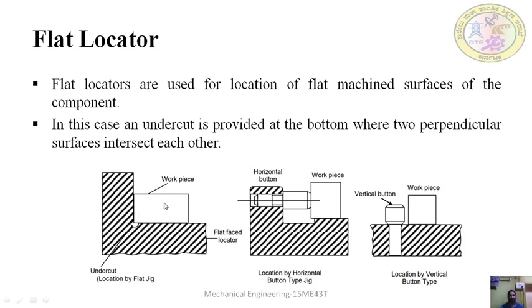Flat locators are used for locating only machined surfaces. If there is a workpiece already having some machined surface — whether horizontal or vertical — that kind of workpiece is firmly held using flat locators. For flat locators, we need a machined surface. Without the machined surface, we cannot use flat locators. If the workpiece has a machined surface, it provides a flat contact between the workpiece and the locator.